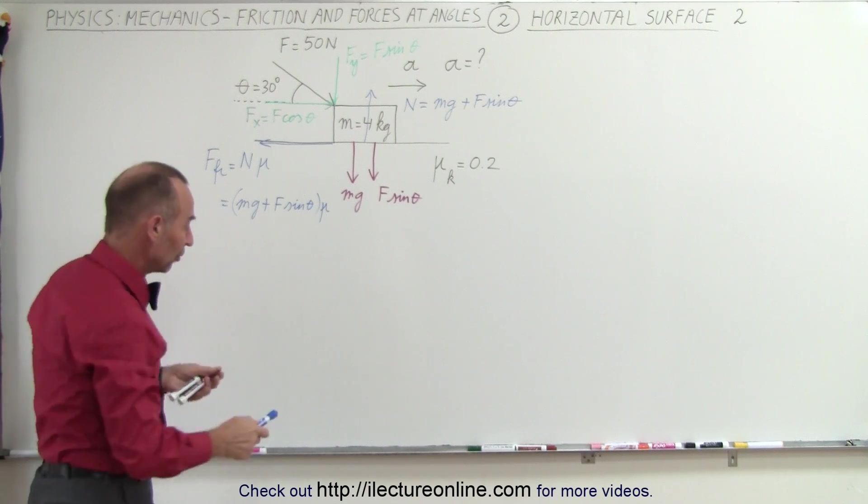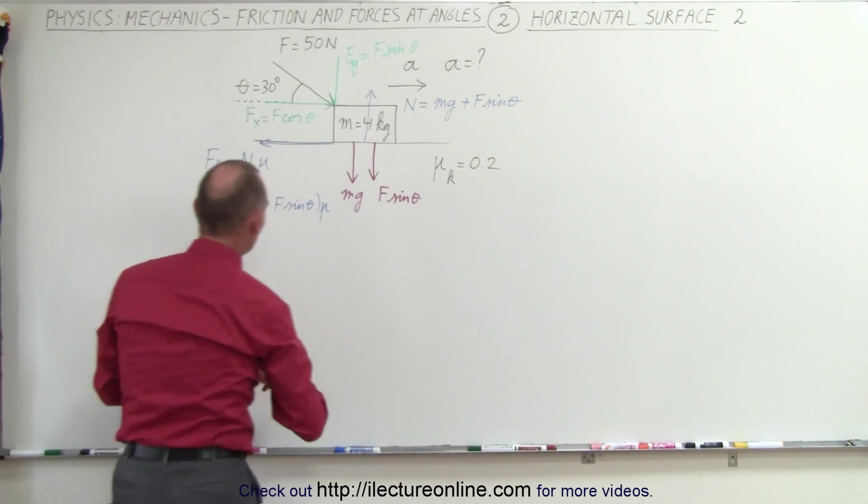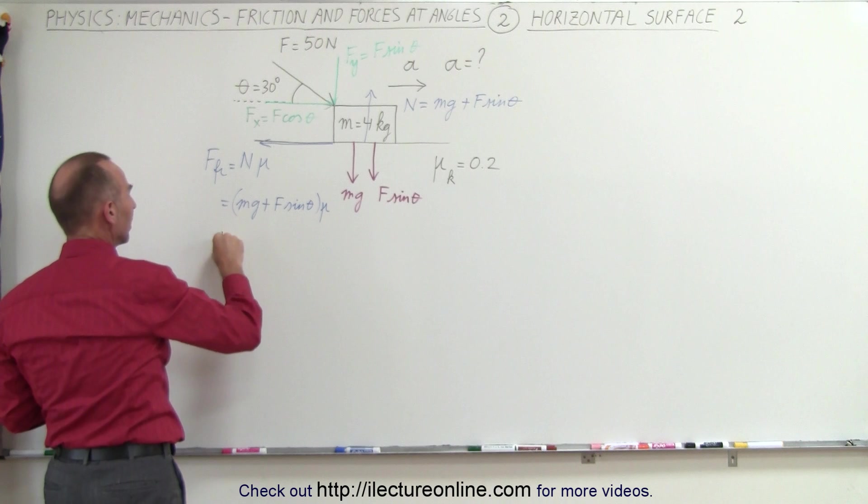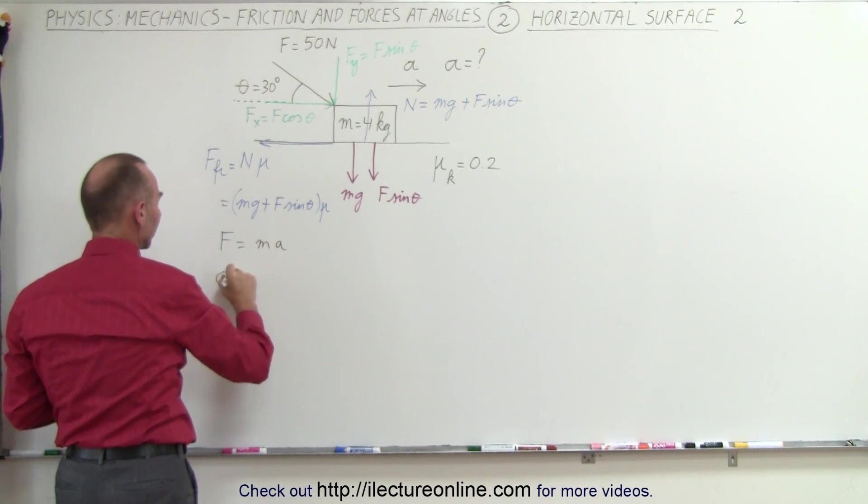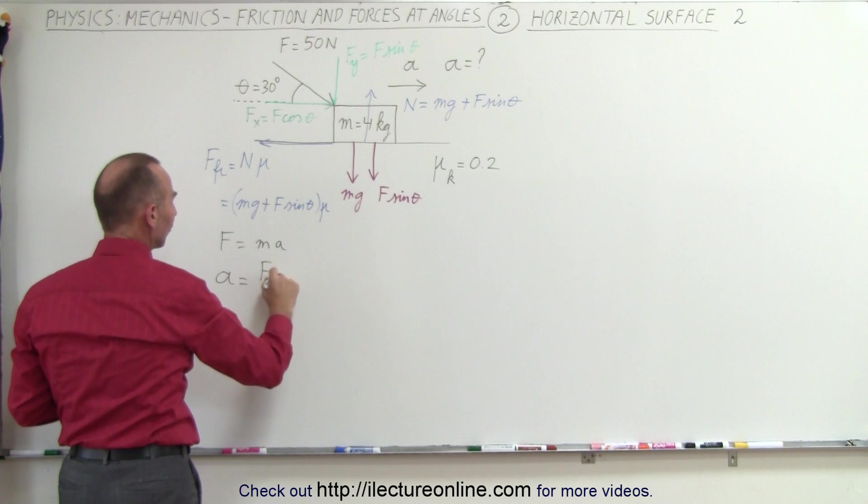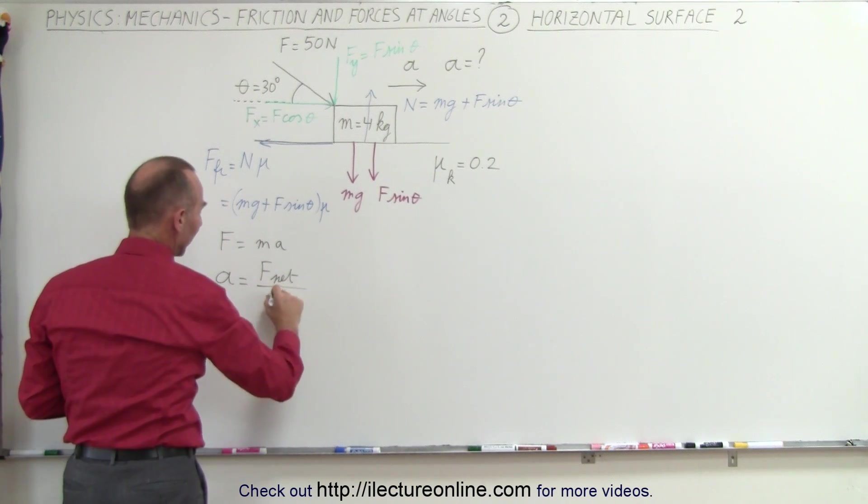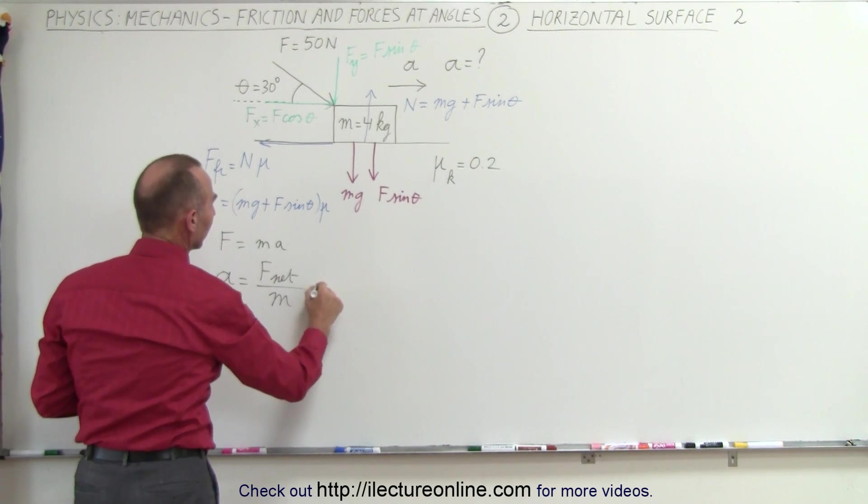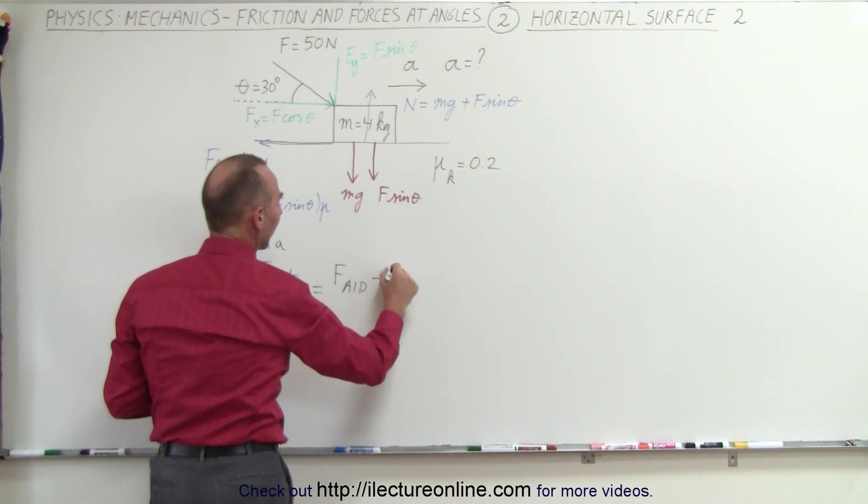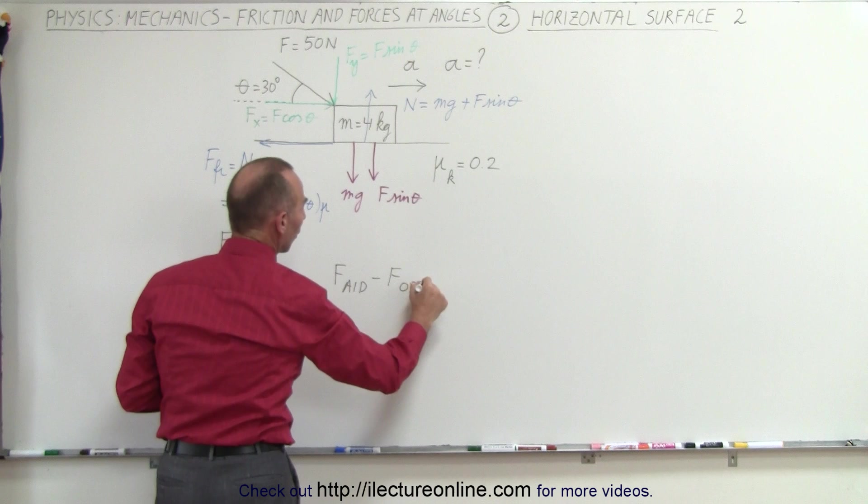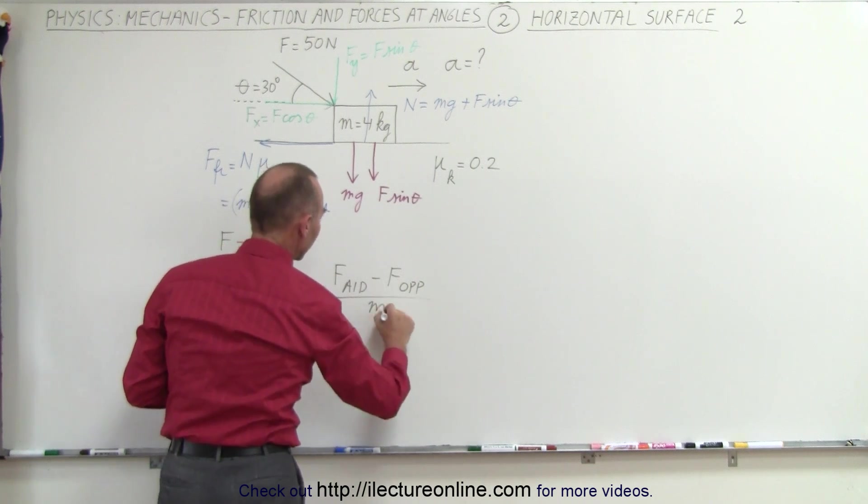Now we're ready to set up our equation. Since we're looking for the acceleration, we want to use the equation f equals ma. Solving for a, the acceleration is equal to the net force acting on the block divided by the mass of the block. The net force will be all the forces aiding the acceleration minus all the forces opposing the acceleration, divided by the mass.